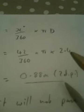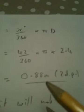The X over 360 formula isn't a magic formula. We're just saying what fraction of the circle do we have? We have 42 degrees out of 360 degrees. Use the calculator, press the buttons: 0.88 metres.